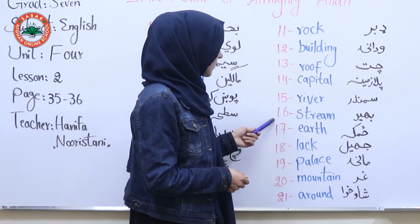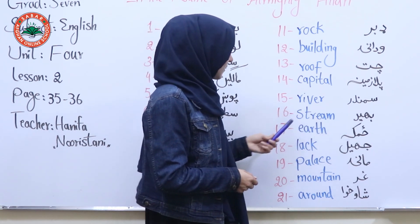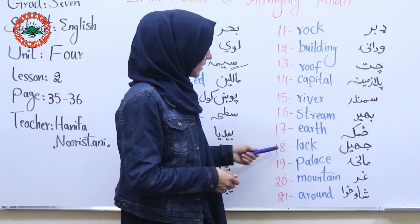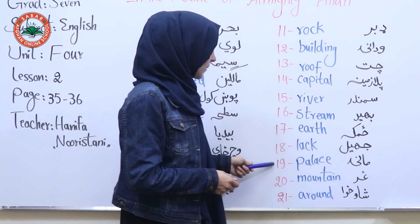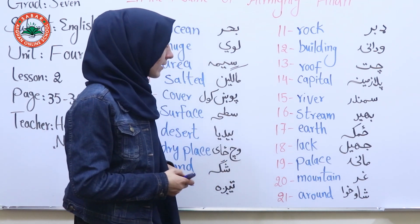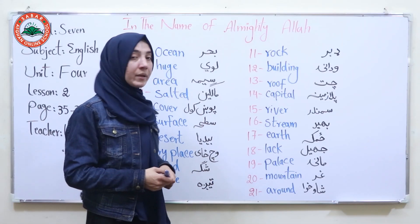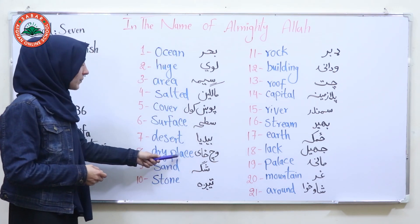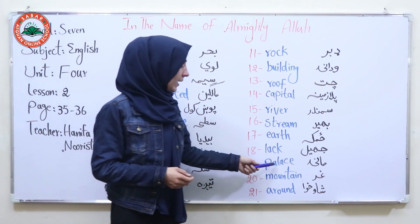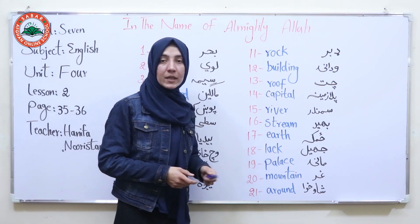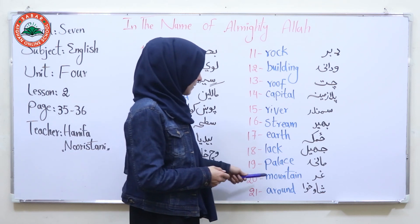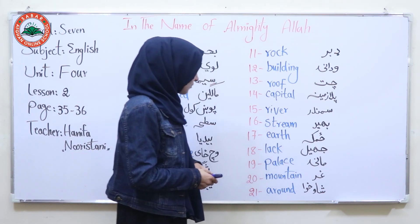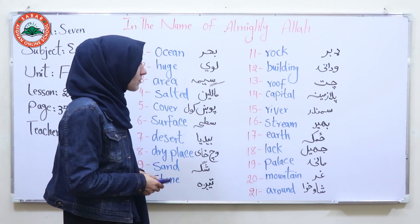Number 16: stream — bahir, yajiryan. Number 17: earth — zemeka. Number 18: luck — jahil. Number 19: palace — manay. Number 20: place — zai. Number 21: mountain — ghar. Number 21: around — shaw.